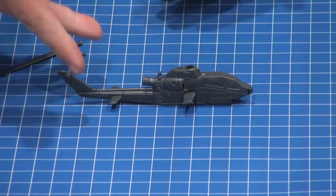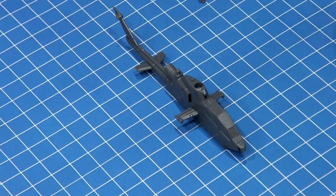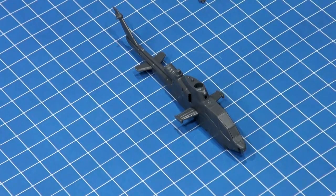And with that you'll see that we have most of the Cobra already put together. We have the fuselage, we have the tail stabilizers and we have the small wings that hold the weapons.